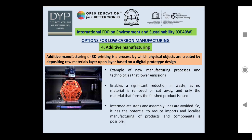The fourth option is additive manufacturing, also called 3D printing — a process by which physical objects are created by depositing raw materials layer upon layer based on a digital prototype design. It enables a significant reduction in waste as no material is removed or cut away; only the material that forms the finished product is used. Intermediate steps and assembly lines are avoided, and it has the potential to reduce imports through localized manufacturing of products.